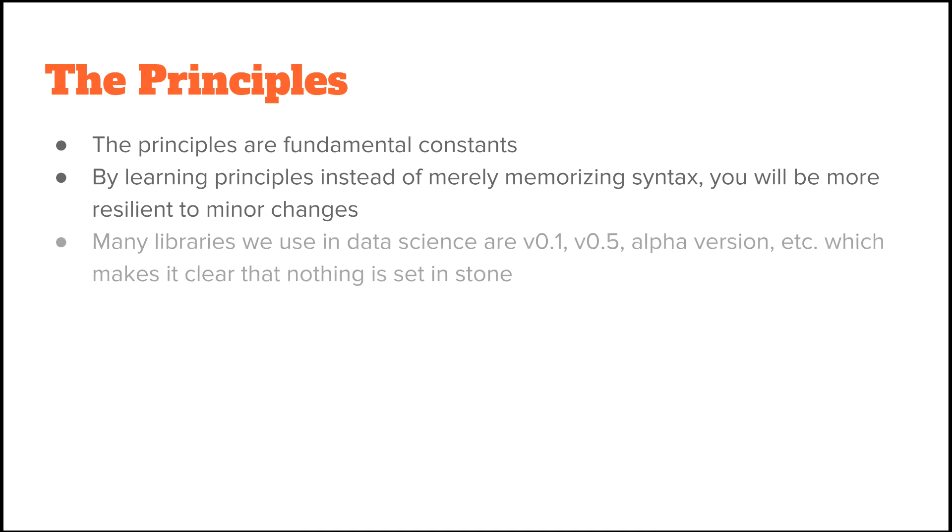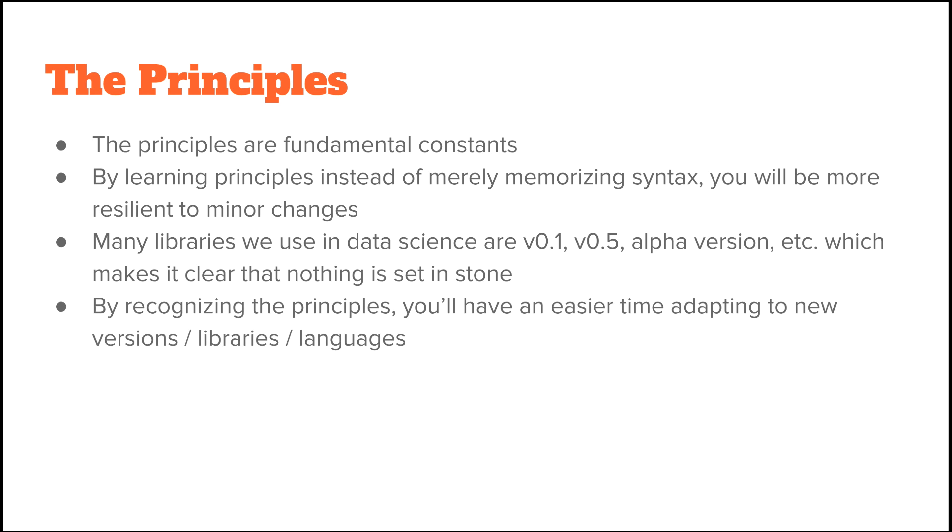A lot of the libraries we use in data science are version 0.1, version 0.5, alpha version and so forth. So you can already tell that they are in a state where nothing is set in stone. Once you learn to recognize the principles, you'll have a much easier time learning new concepts and adapting to new versions, new libraries, and even new languages.